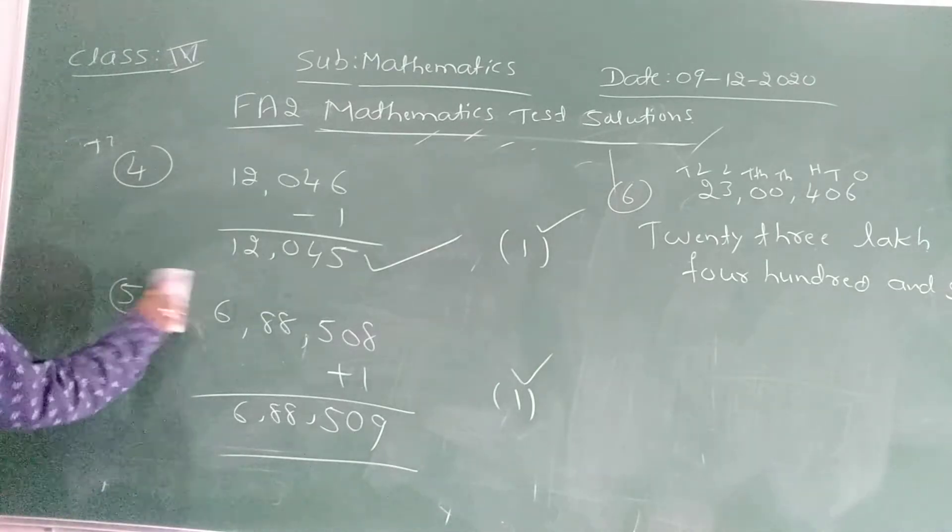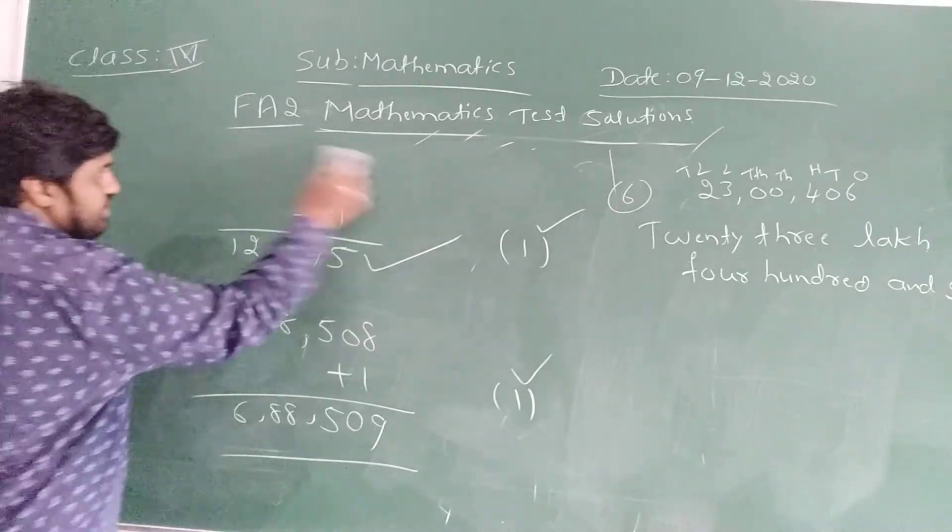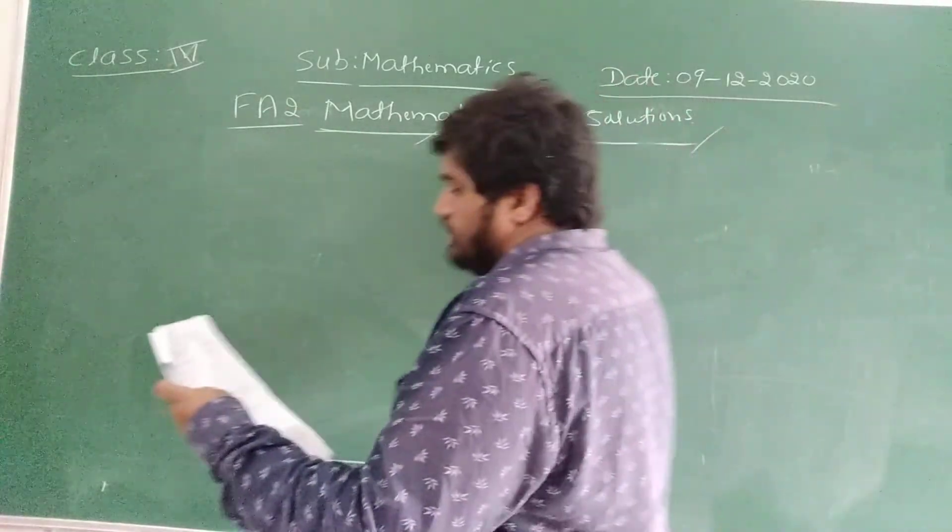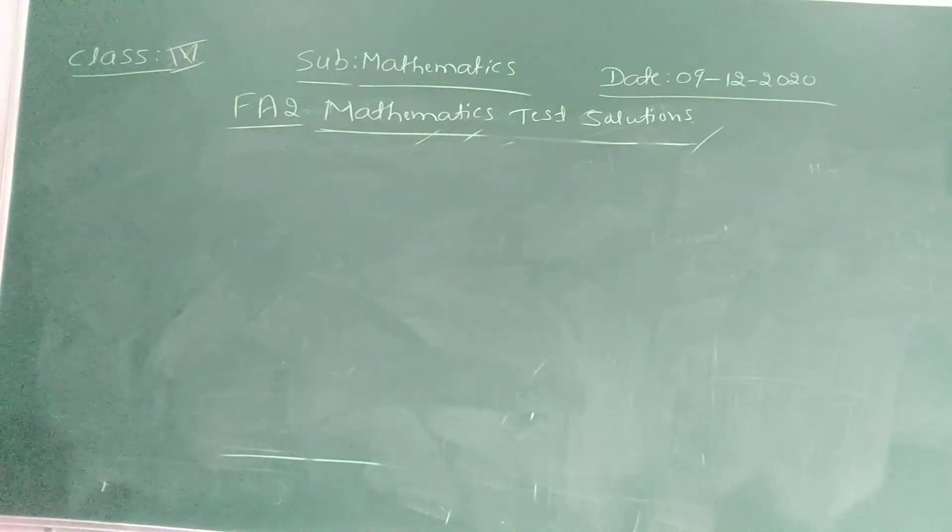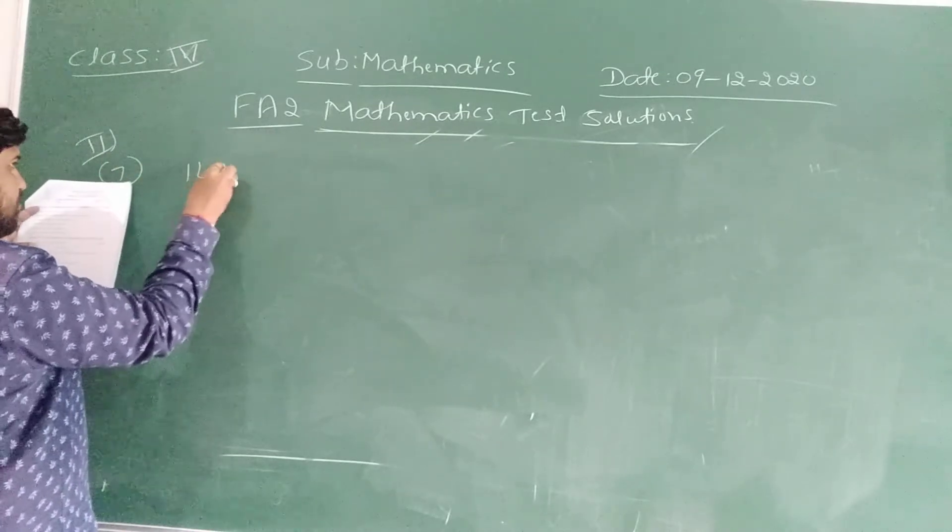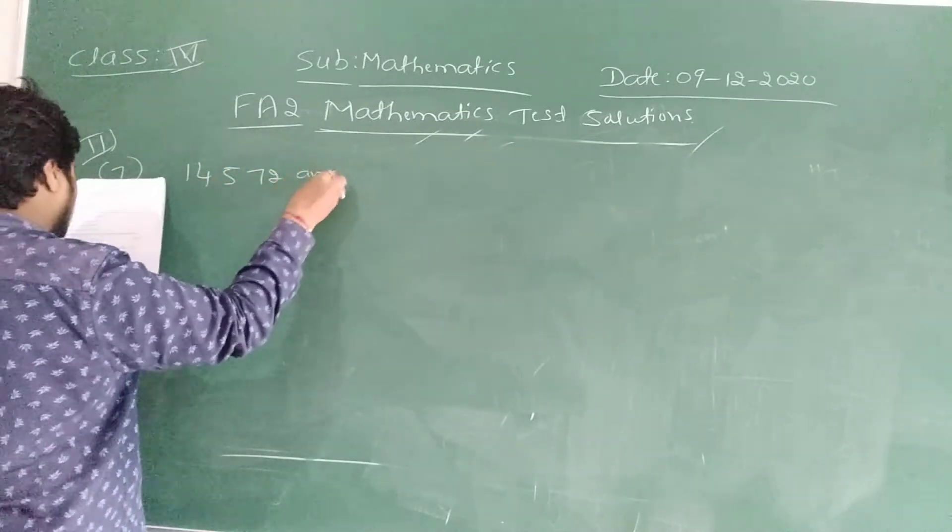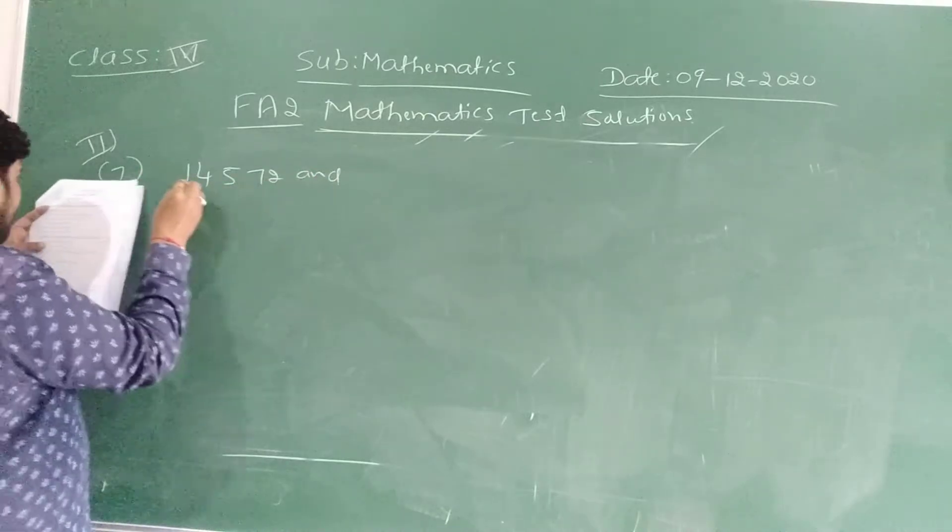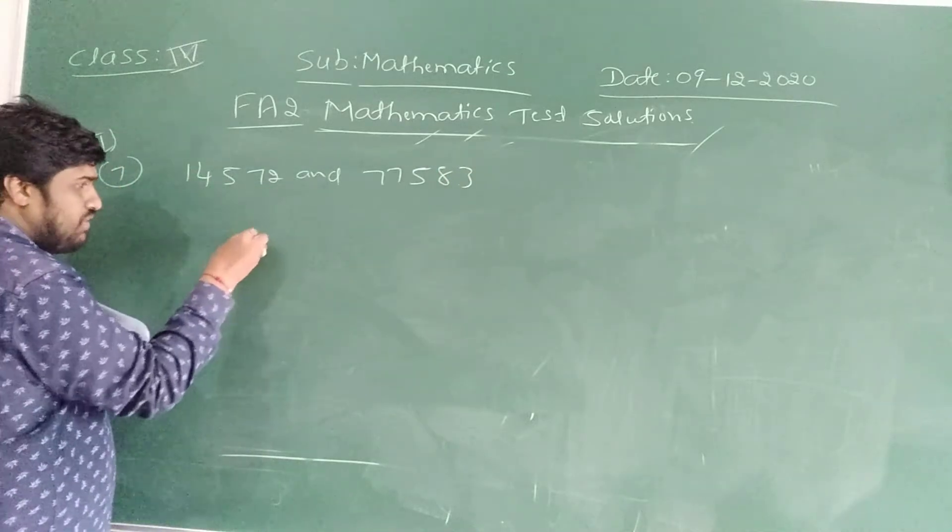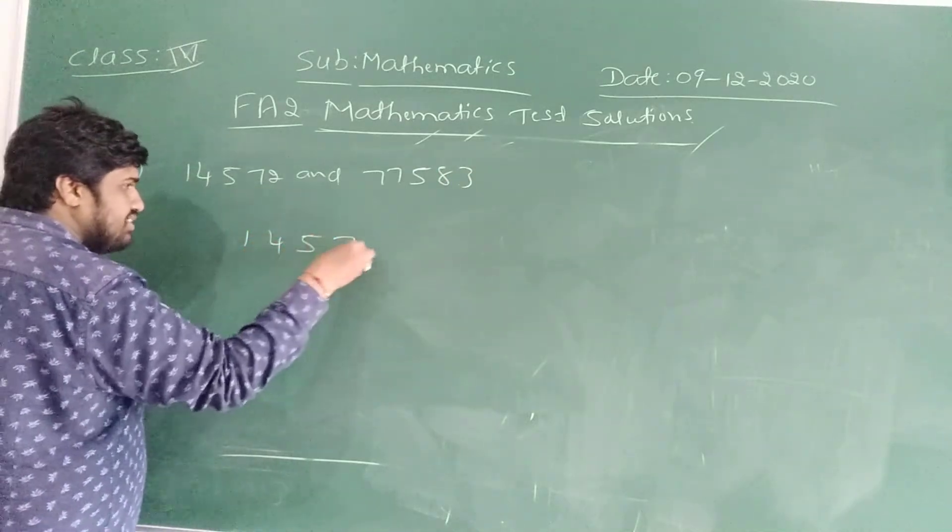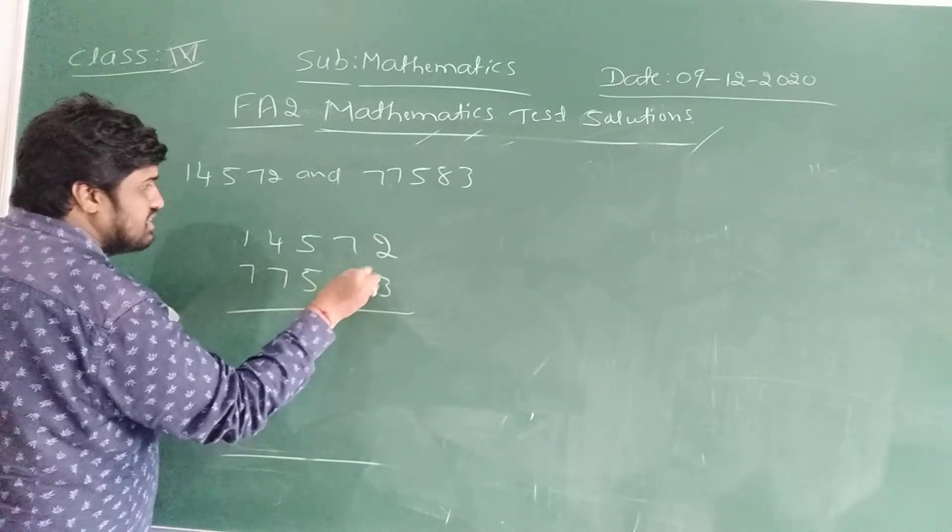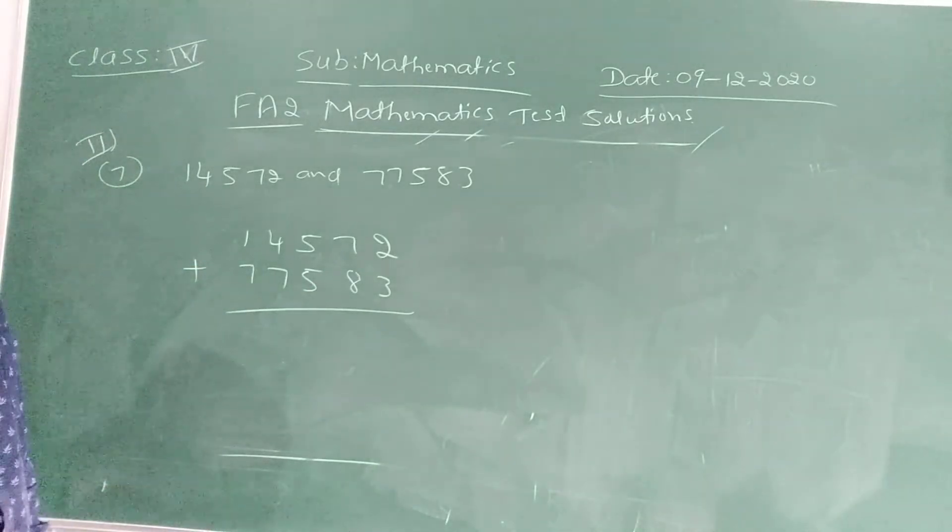Now I am going to do the second part. In the second part, each question carries 2 marks. See, question number 2 is first question. Find the sum of 14,572 and 77,583. See, I am going to write this number in proper way. 14,572, 77,583. Sum means addition.